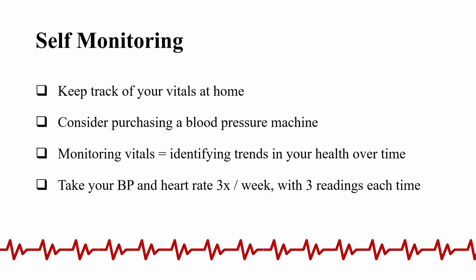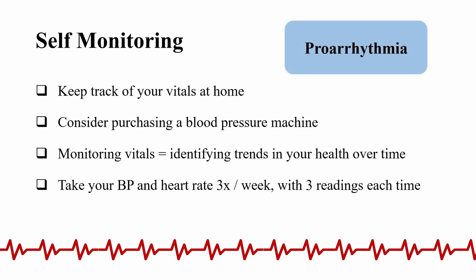A key issue with antiarrhythmics is that they have the potential to lead to the development of different arrhythmias or worsen existing ones — this is referred to as a proarrhythmia. This is why it is important for patients to monitor their vitals at home. By consistently monitoring blood pressure and heart rate, you'll be able to identify trends in your health over time. The best practice is to take your blood pressure and pulse three times a week with three readings each time, helping both you and your doctor assess how you are responding to your medications.